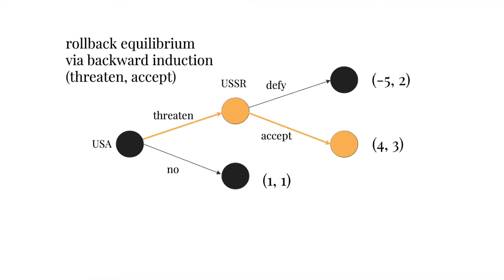Moving on to the next node, if the U.S. chooses to engage in a strategy of brinkmanship, then the Soviets have to decide whether they're going to defy or accept that threat. Say the Soviets acknowledge the fact that there is that risk of mutually assured destruction, then they're going to choose to accept instead of defy the threat and assign a higher payoff of three instead of two.